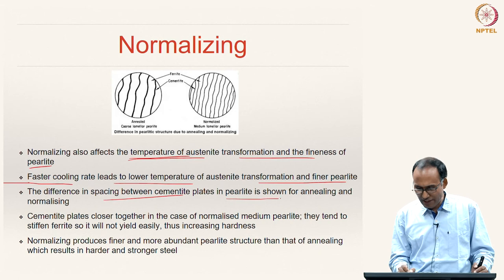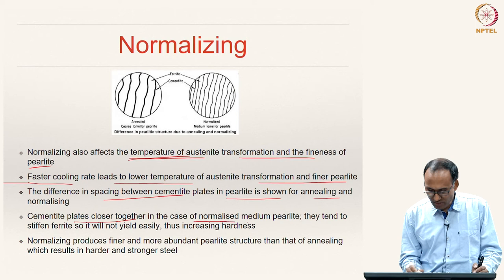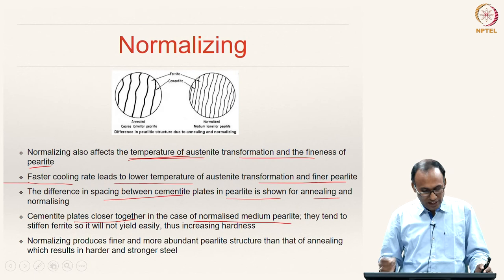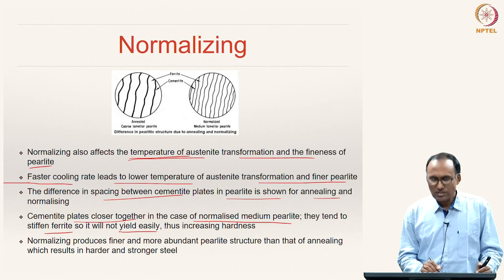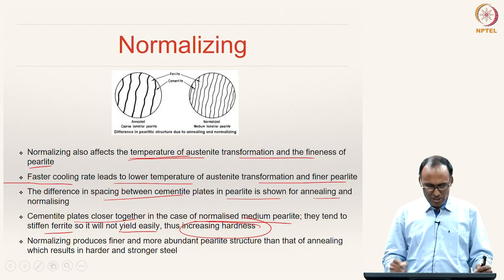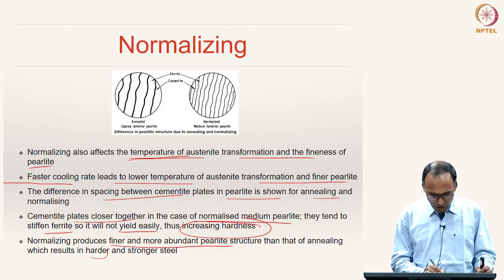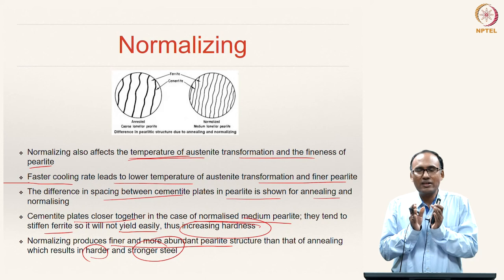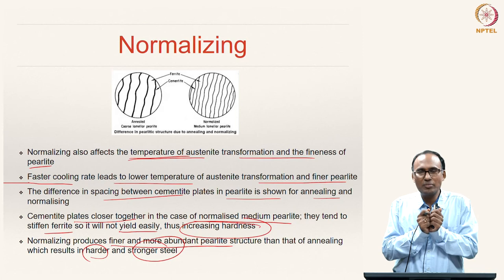The difference in spacing between cementite plates in pearlite is illustrated for annealing versus normalizing. The cementite plates are closer together in normalized medium pearlite because of the finer microstructure, and they tend to stiffen the ferrite. Normalizing produces a finer and more abundant pearlite structure than annealing, resulting in a harder and stronger steel because the closer cementite layers offer more stiffness.